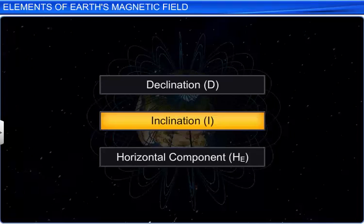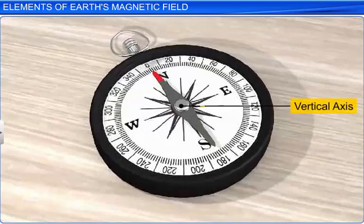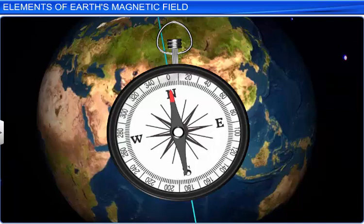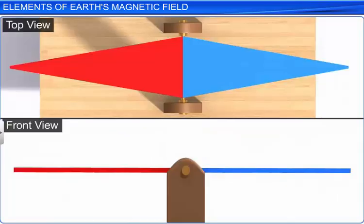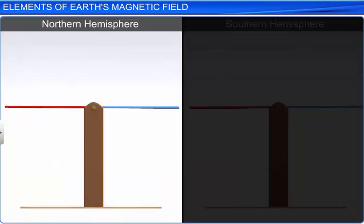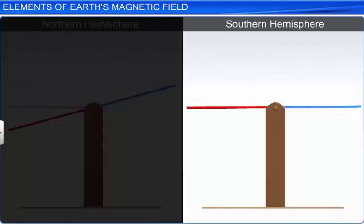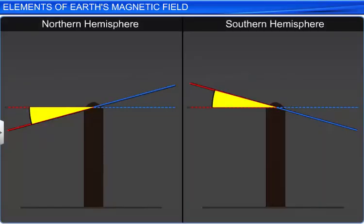The second element of the Earth's magnetic field is the angle of dip or inclination. A magnetic compass needle is provided with a pivot such that it can rotate freely about a vertical axis. The needle comes to rest when aligned with the magnetic meridian to indicate the magnetic north. If the needle were also provided with a pivot such that it can rotate freely about a horizontal axis, it would also rotate in the magnetic meridian plane. If the compass is placed in the northern hemisphere, its north end dips down from the horizontal position. If the compass is placed in the southern hemisphere, its south end dips down from the horizontal. The angle through which it dips with respect to the horizontal plane at that point is known as the angle of dip or inclination, denoted by the capital letter I.